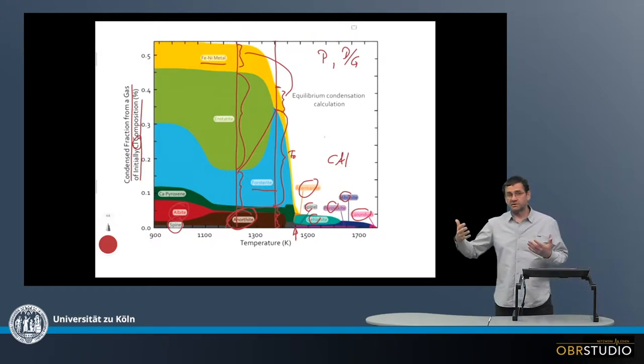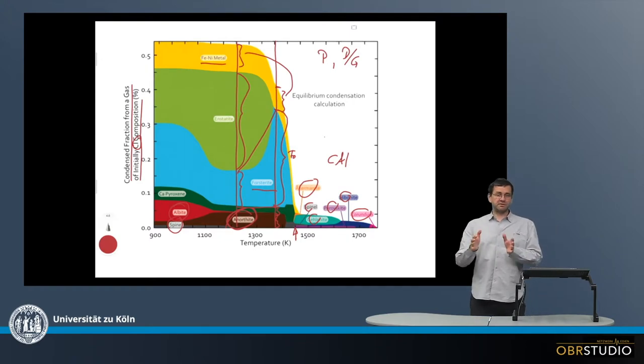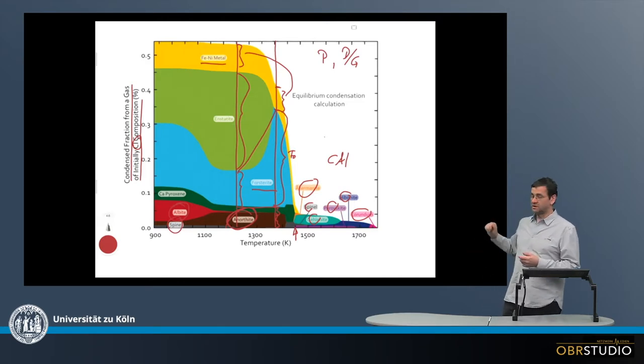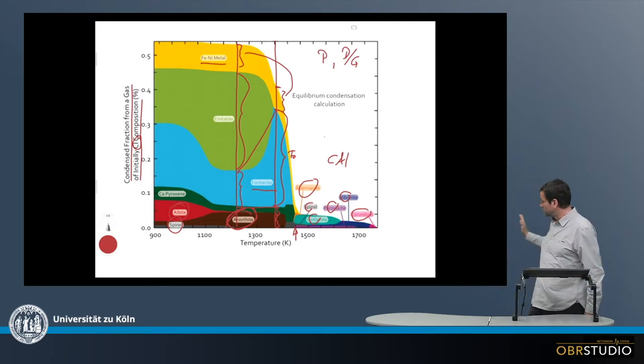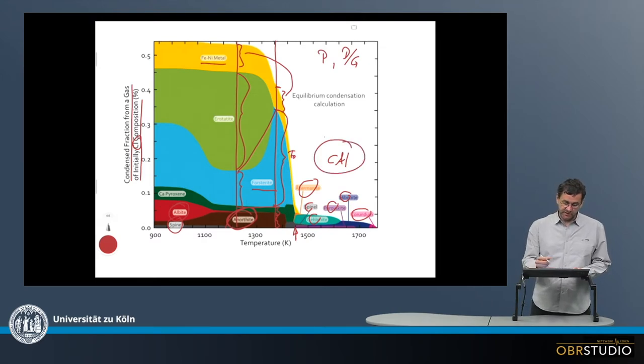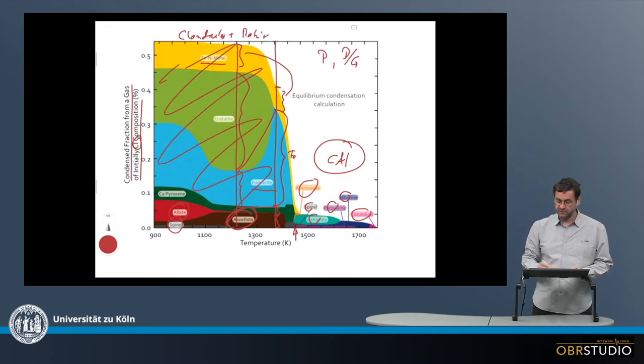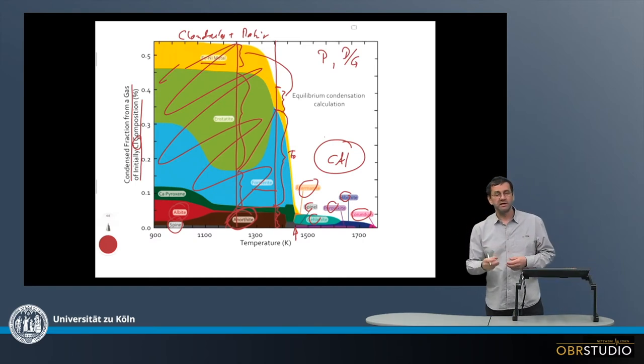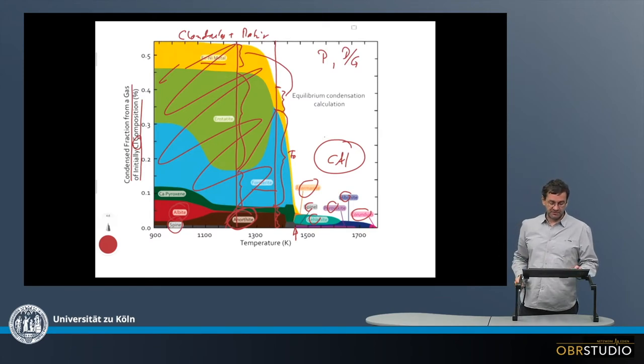So this is the equilibrium condensation sequence here, and this is a very good start to understand the condensation, although certainly there was also fractional condensation because certainly not all the material completely reacted. If this were the case, we would not have any CAIs. So first this is all CAI material here. And then all the other material here is then mainly chondrules and matrix material. So all this here is basically chondrules and matrix material, which consists mainly of olivine, pyroxene, feldspar, and blebs of metal and sulphide.